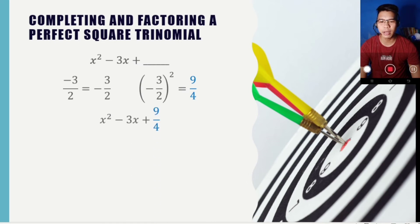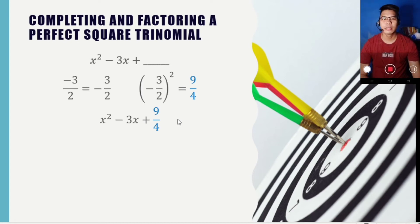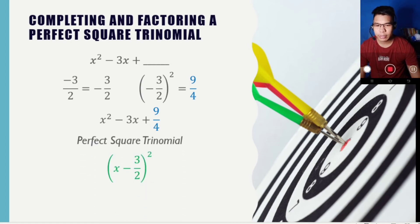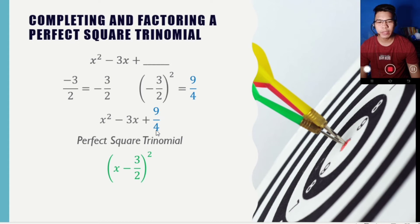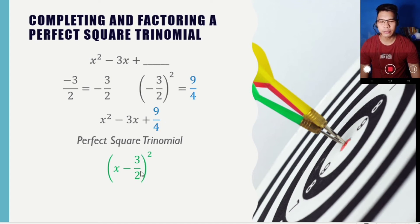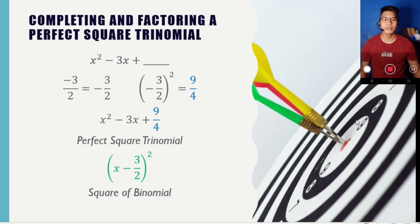So 9 over 4 is our third term, giving us x squared minus 3x plus 9 over 4. To factor it into a square of binomial, we get the square root of x squared, which is x, copy the sign of the middle term minus, and then get the square root of 9 over 4: the square root of 9 is 3 over the square root of 4, which is 2. So the result is quantity x minus 3 over 2, quantity squared.